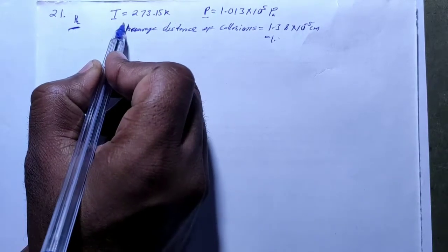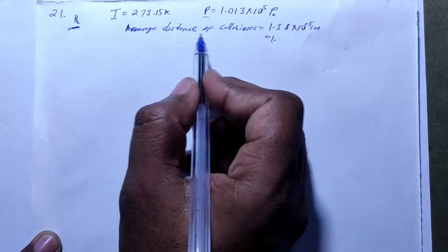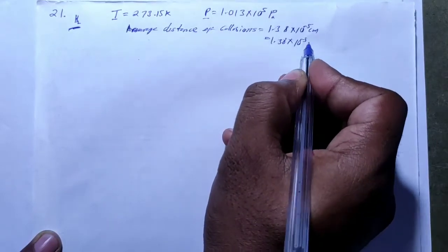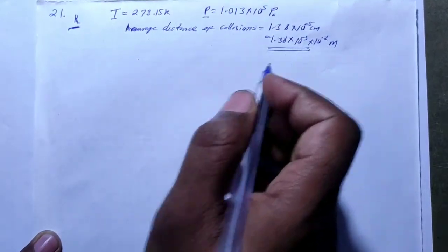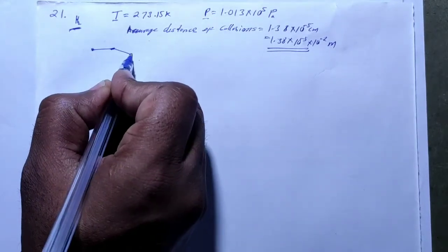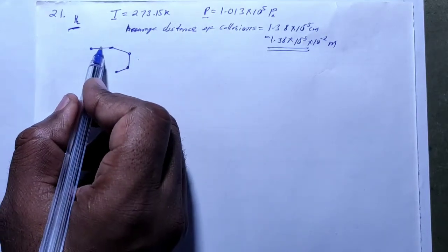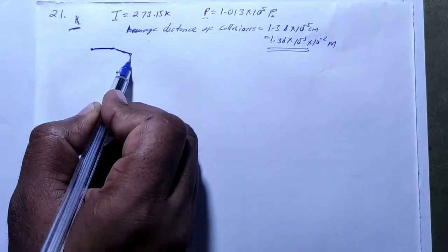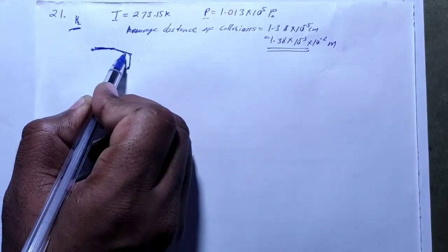We have hydrogen gas. Its temperature at standard conditions is 273.15 Kelvin. Pressure is 1.013 × 10⁵ Pa. And the average distance between two collisions is 1.38 × 10⁻⁵ cm.